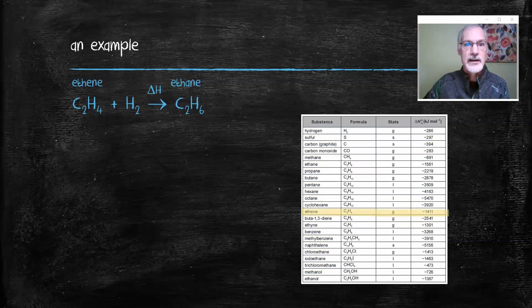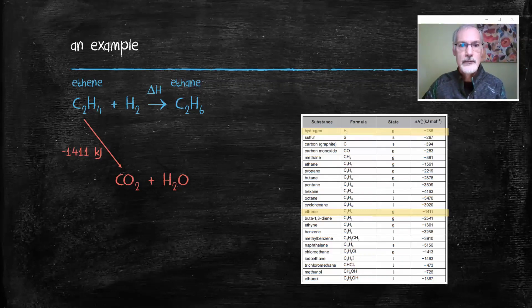First of all I locate the chemical ethene and I can see the heat associated with burning it. Now the combustion or burning of ethene will result in carbon dioxide and water. So I have the heat for that reaction. I also can locate hydrogen on the table and burning hydrogen produces water vapor or water. I also have ethane on the table and the heat to burn it. So this is the information that I'm given.